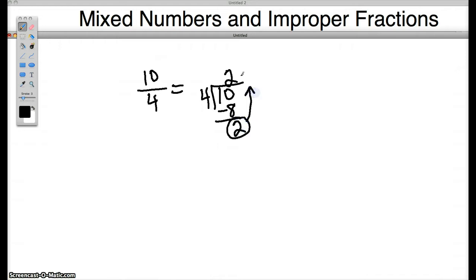This becomes my remainder of course which is my new numerator for my fraction part of the mixed number. So the answer is 2 for this number and the remainder 2 becomes my numerator and I keep the same denominator. So 2 and 2 4ths.